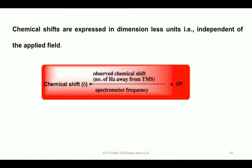There should be a formula to calculate chemical shift. Chemical shifts are expressed in dimensionless units — they are independent of the applied field strength. The formula is: delta equals the observed chemical shift in hertz away from TMS, divided by the spectrometer frequency, multiplied by 10⁶. That is, how many hertz the particular proton is away from TMS, divided by the operating frequency of the NMR spectrometer, multiplied by 10⁶.